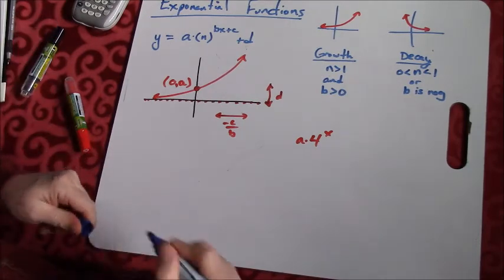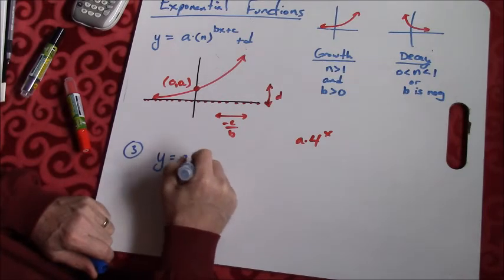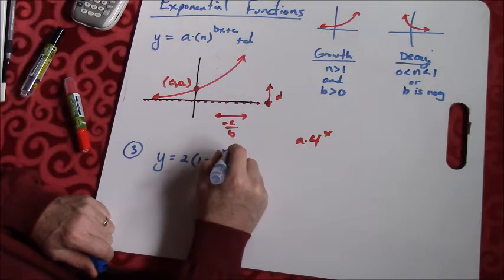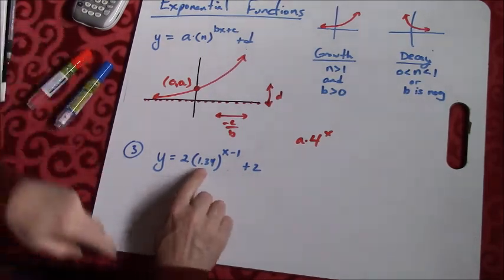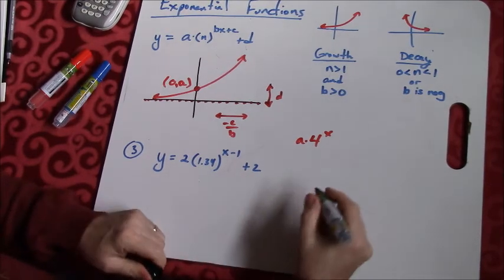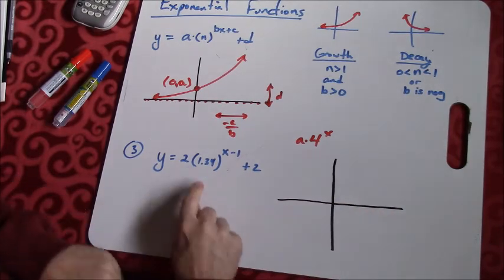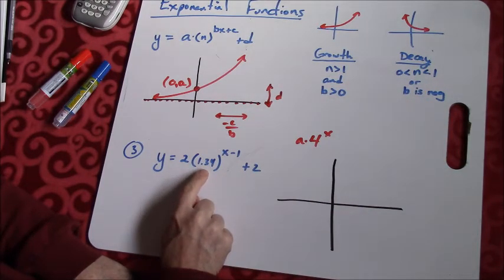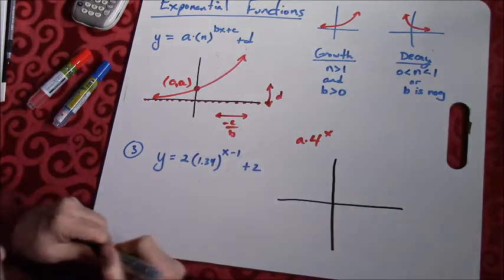So let's try one. We'll do one together here. Call this problem number 3. Let's say I've got y equals 2 times 1.34 raised to the x minus 1 plus 2. Now when I first look at this, you think, 1.34, can't we just go with easy numbers, Judson? Well, I think that is an easy number. All we care about is, is that number greater than 1 or less than 1? It's always going to be positive. Since it's larger than 1, that means that right now I'm thinking I'm drawing a picture that looks like this. Exponential growth.